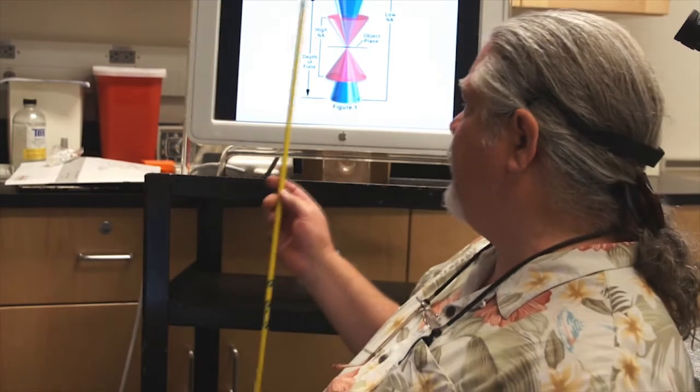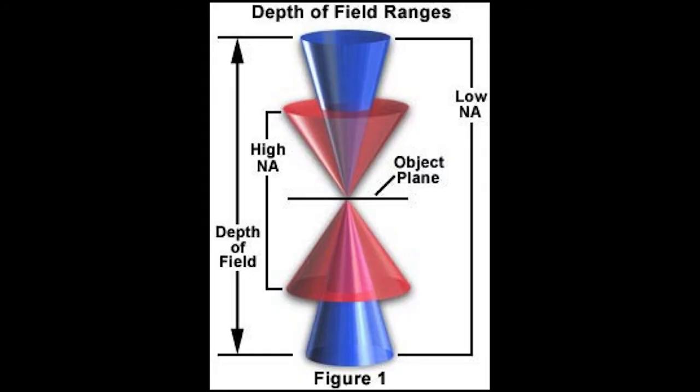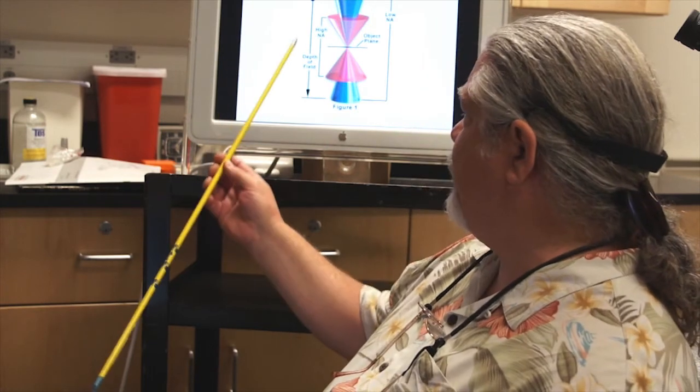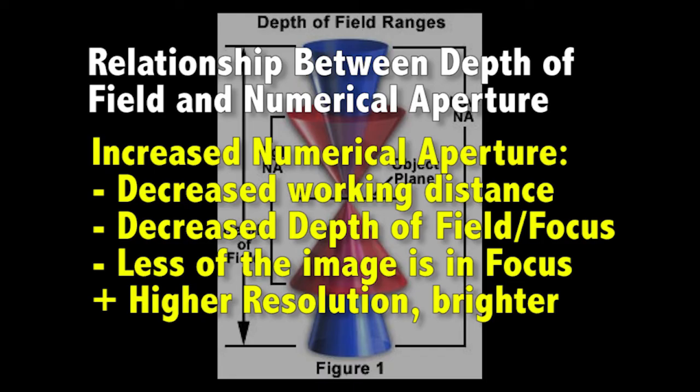Here I have a diagram that shows a low numerical aperture objective with a very large depth of focus. Everything from the top of this blue cone to the bottom is in focus with a low numerical aperture objective. That means a lot of information is traveling through the objective, so it's not highly resolved. When you increase your numerical aperture, not only do you decrease your working distance as we saw before, but also your depth of field or depth of focus decreases. Less of the image is in focus at one time, but it's at a higher resolution and it's a brighter image.